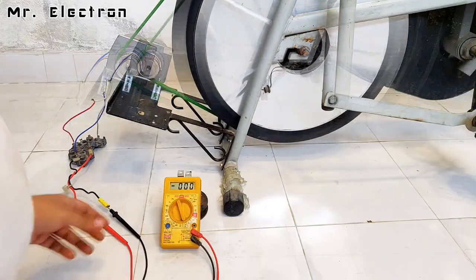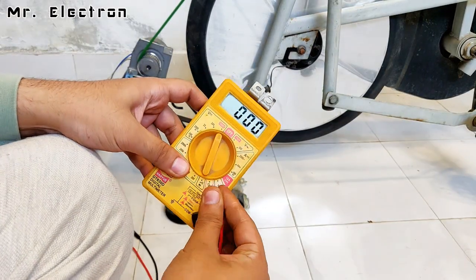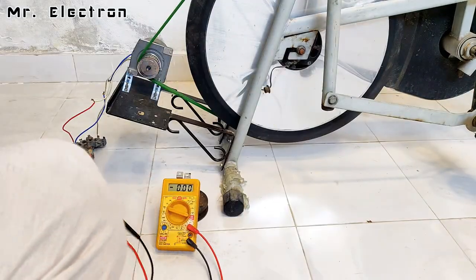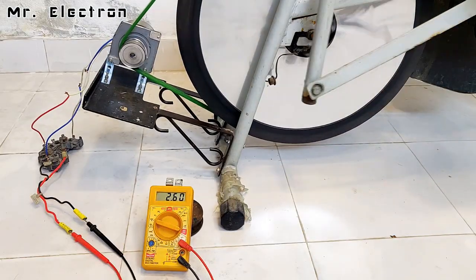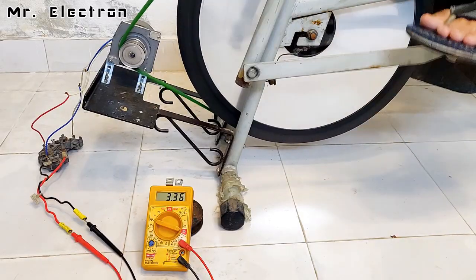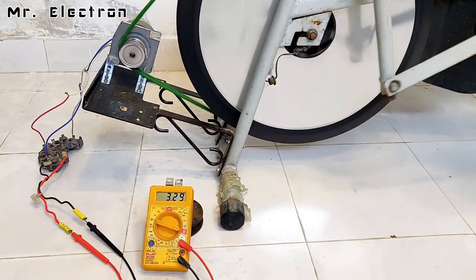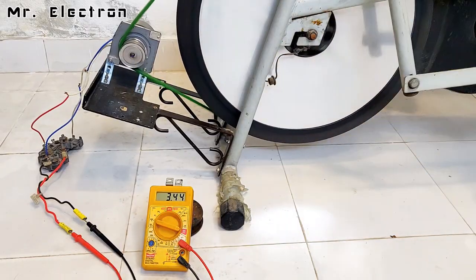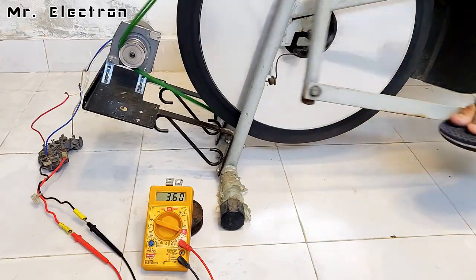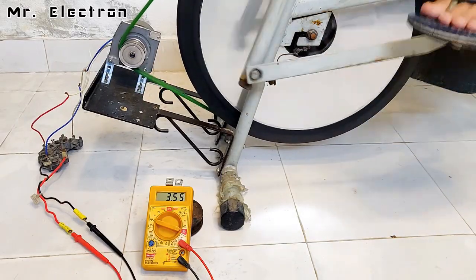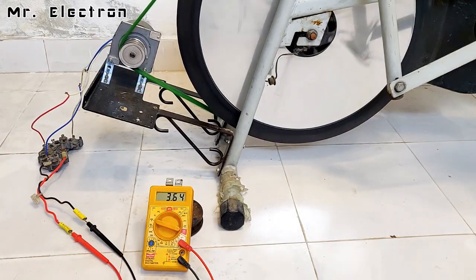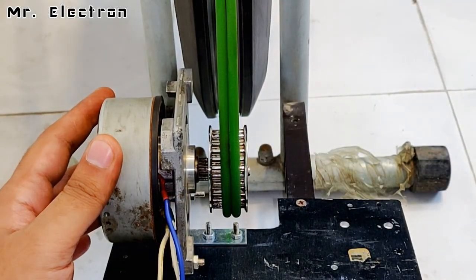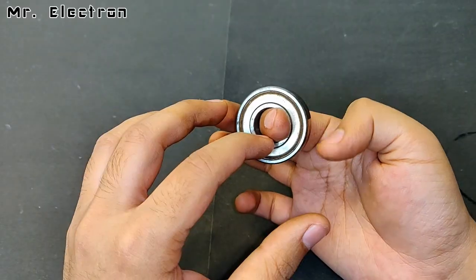As you saw, the maximum generated voltage was 19 volts. Let's measure the current now. The current was only 3.64 amps because the friction between belt and pulley is very less.